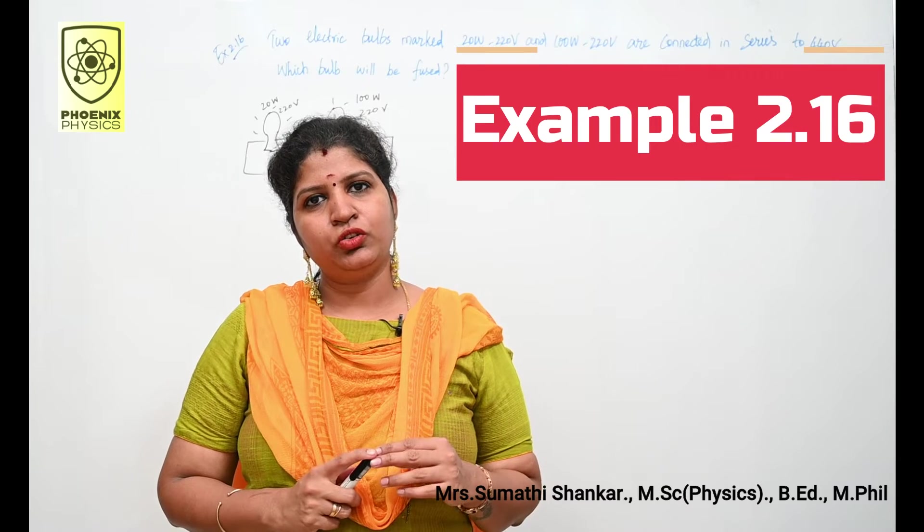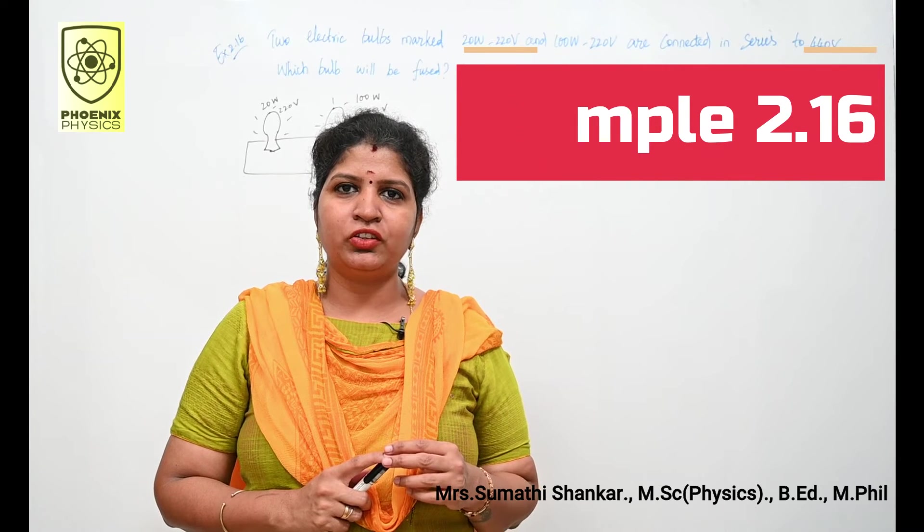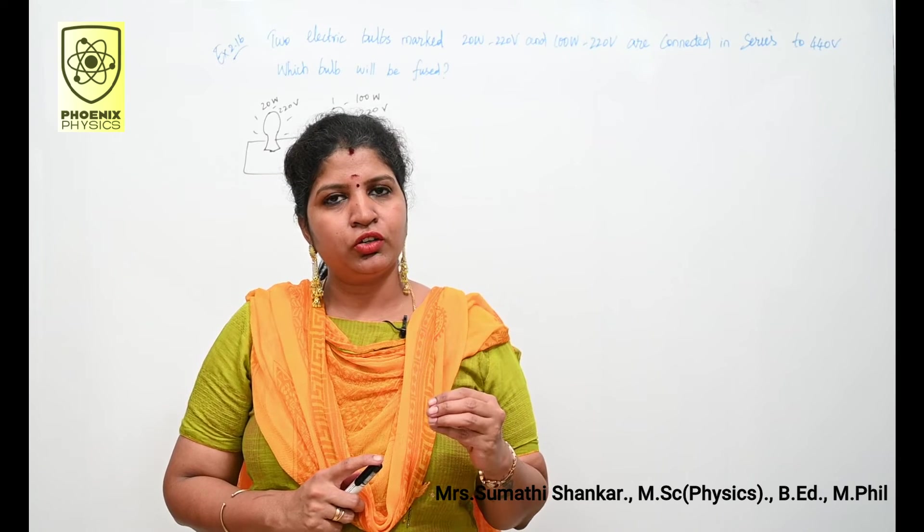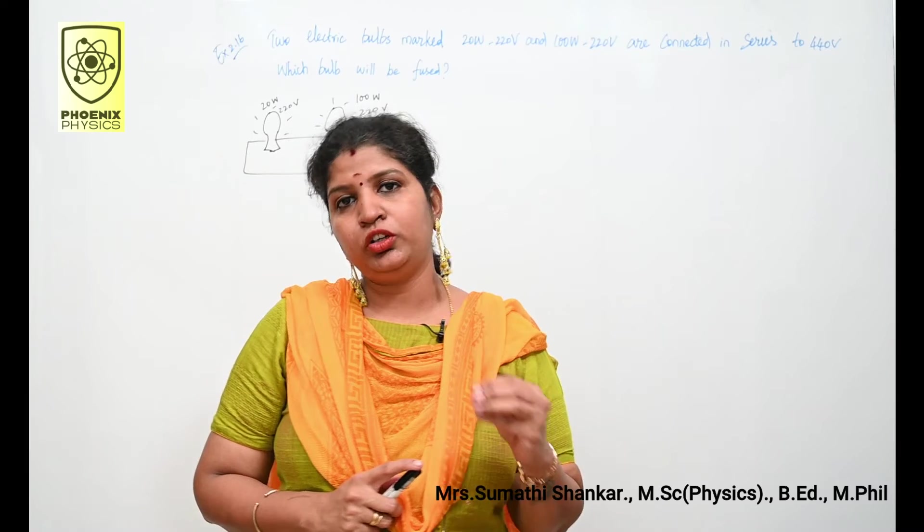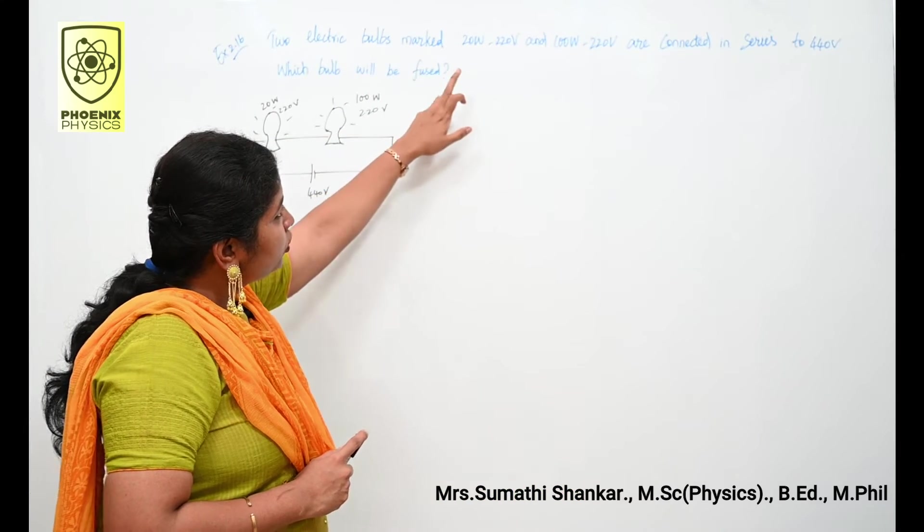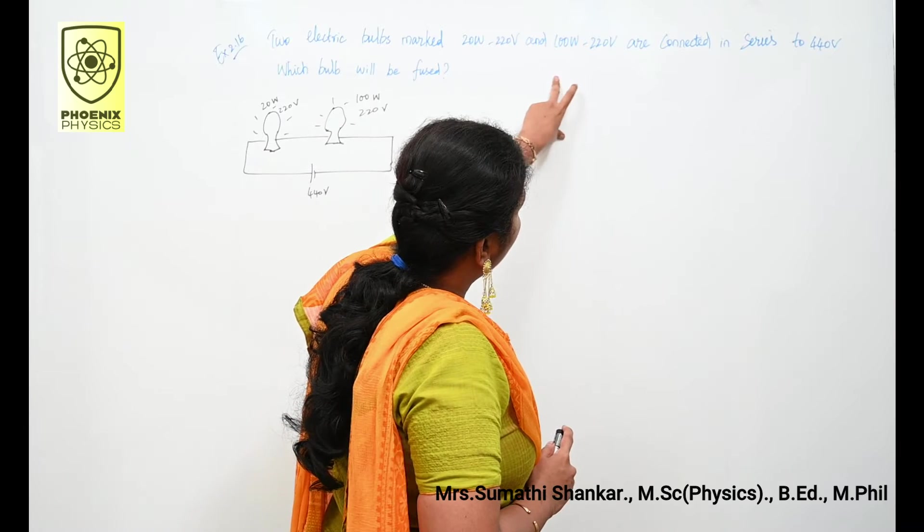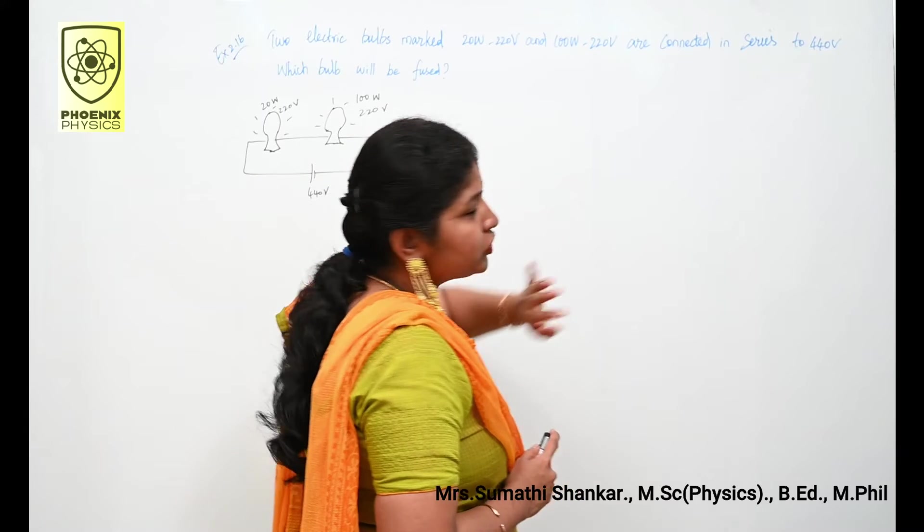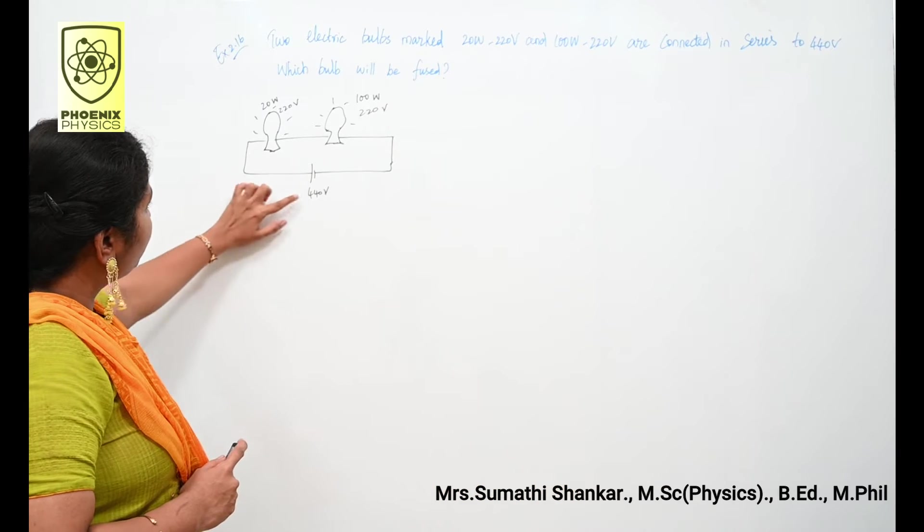Hello friends and my dear students, welcome back to my channel Phoenix Physics. Today we are going to discuss example 2.16. Two electric bulbs marked 20 watt 220 volt and 100 watt 220 volt are connected in series to 440 volt. Which bulb will be fused?